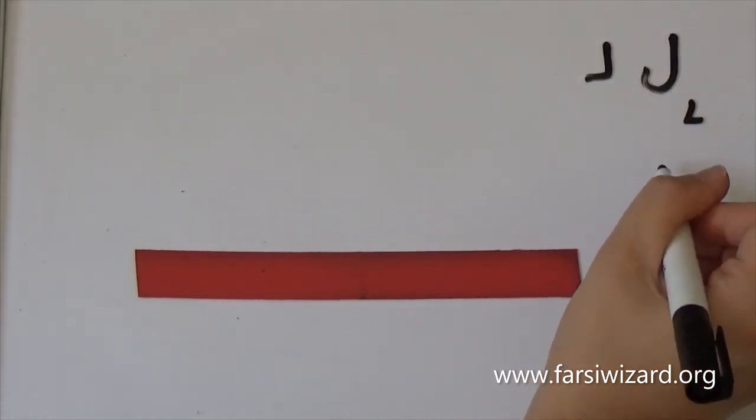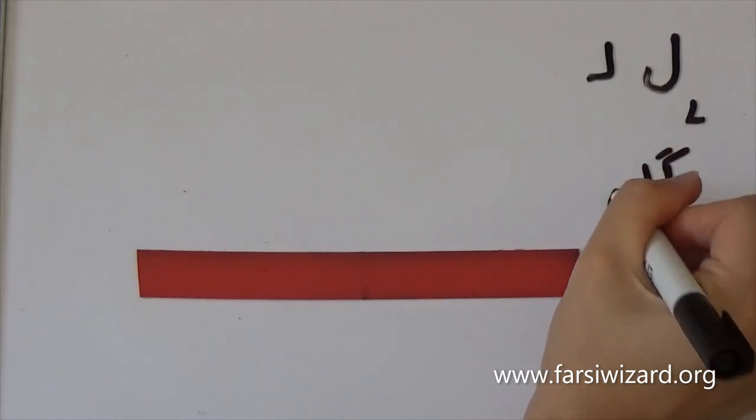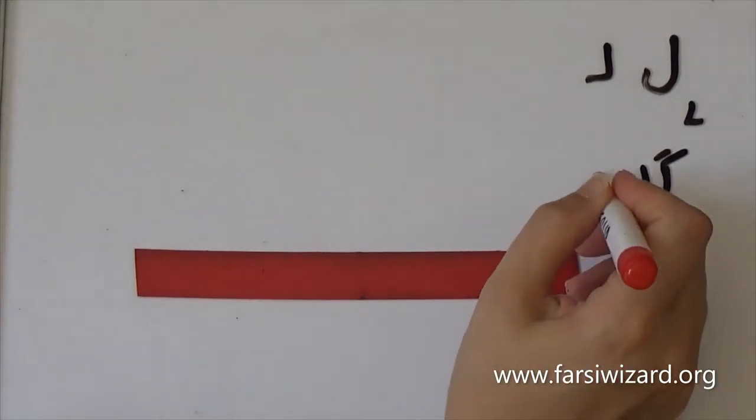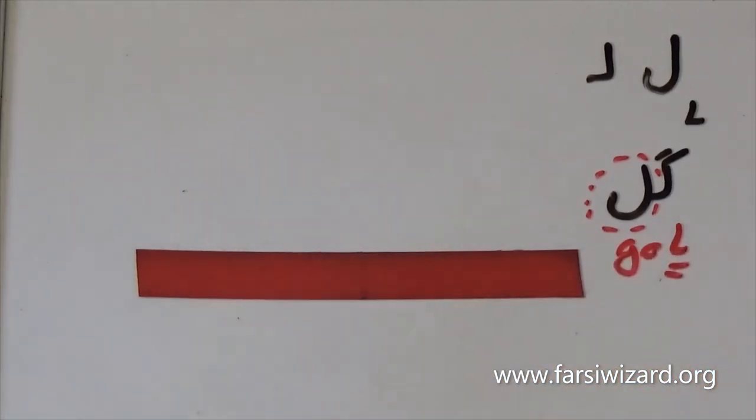So the first one, lam, as you can see kind of looks like L in English. A good example for that would be the word gol, gol ending in lam, which means flower.